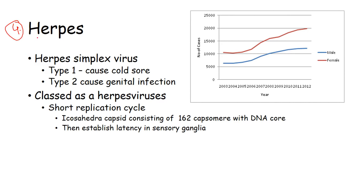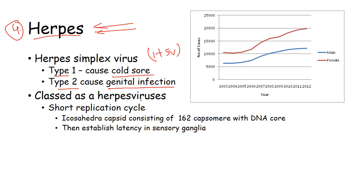The fourth type of STD is herpes, and it is dangerous. Herpes is caused by herpes simplex virus (HSV). There are two types: HSV type 1 causes cold sores, while HSV type 2 causes genital infection. They have a short replication cycle with a capsid consisting of 162 capsomeres and a DNA core. Herpes infection is more predominant in females compared to males, and establishes latency in the sensory ganglia of the body.